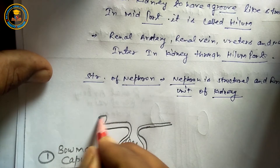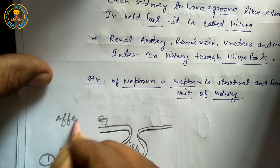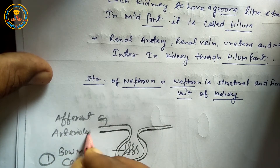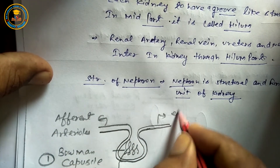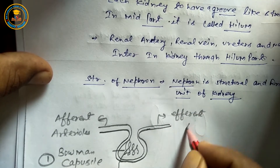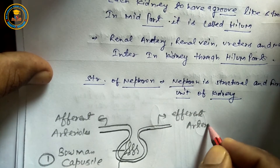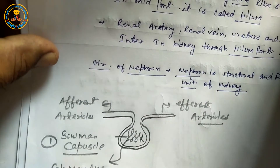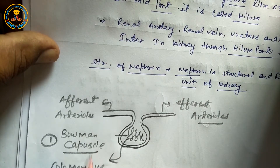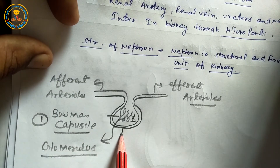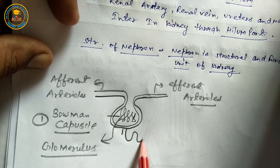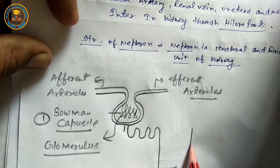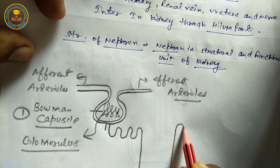Next: these are efferent arterioles. Efferent arterioles form a network-like structure inside the Bowman's capsule, which is called the glomerulus. Next, there are some tube-like parts called renal tubules.